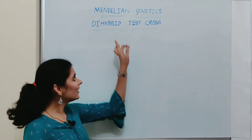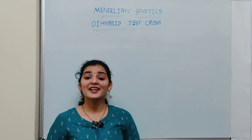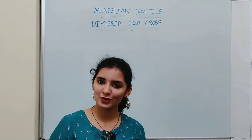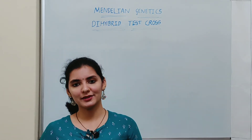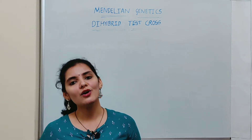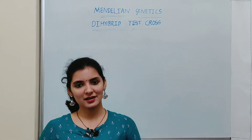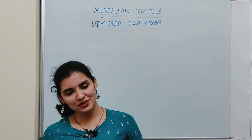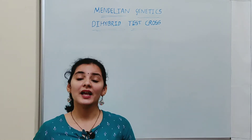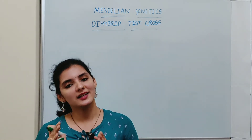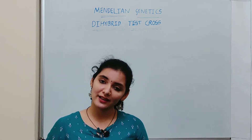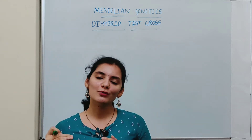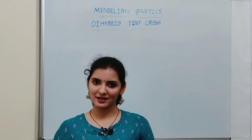In this video, we will discuss about dihybrid test cross. In the previous video, I discussed regarding test cross and monohybrid cross. Similar to that of monohybrid cross, even in dihybrid cross, test cross is a crossing of a plant of unknown genotype with a double recessive parent. The intention of test cross is to find out the genotype of an unknown plant by crossing it with a double recessive parent.